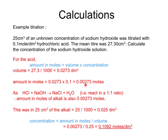The reaction between hydrochloric acid and sodium hydroxide is a 1:1 molar ratio, so moles of NaOH = 0.00273 mol. We know the volume of alkali is 25 cm³ = 0.025 dm³. Concentration of NaOH = moles ÷ volume = 0.00273 ÷ 0.025 = 0.1092 mol/dm³.